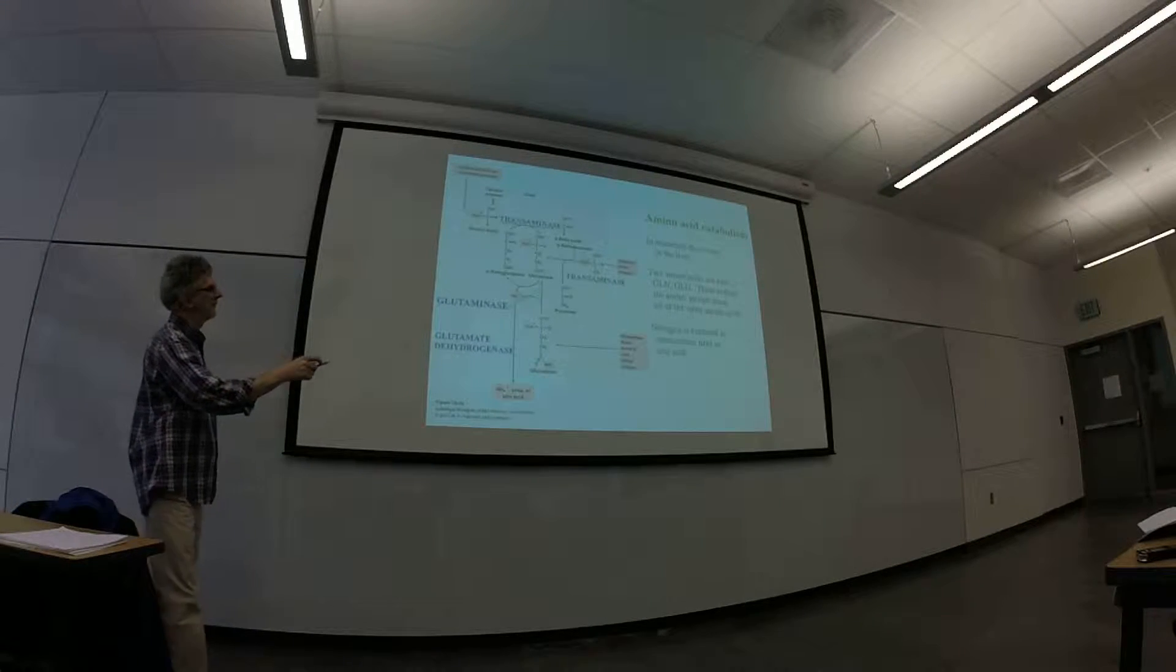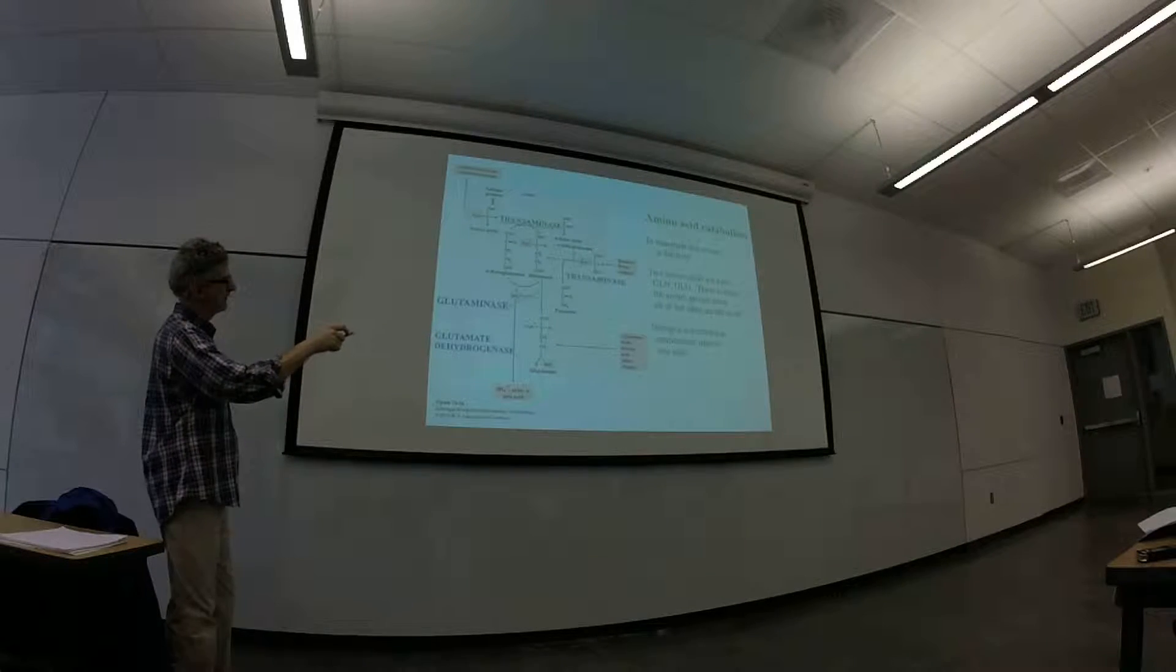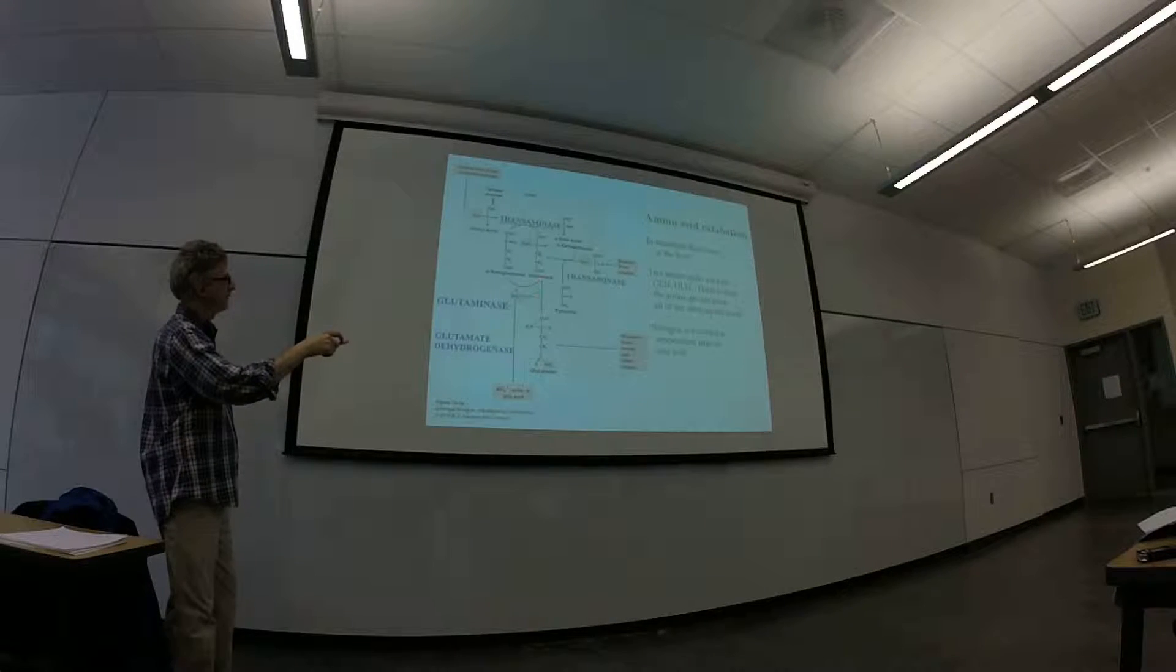And here, coming in from muscle, we've got alanine. We've got alanine, we've got alpha-ketoglutarate again. So substrate, substrate, product glutamate, product pyruvate.